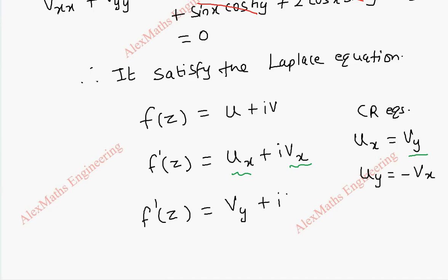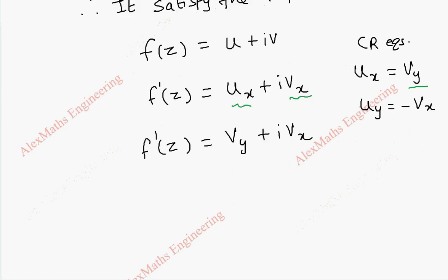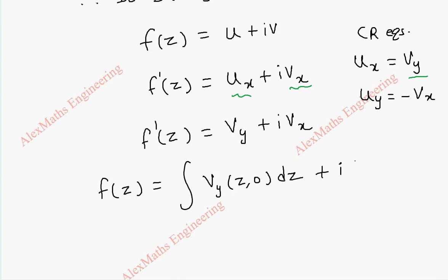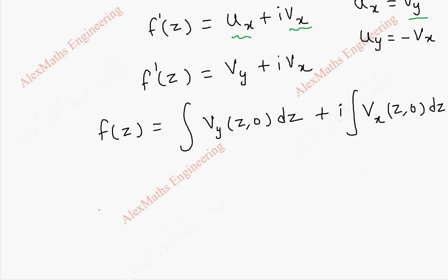So f dash of z becomes vy plus ivx, and using the Milne-Thompson method, f of z becomes the integral of vy of (z, 0) dz plus i times the integral of vx of (z, 0) dz. So we need vx of (z, 0) and vy of (z, 0).